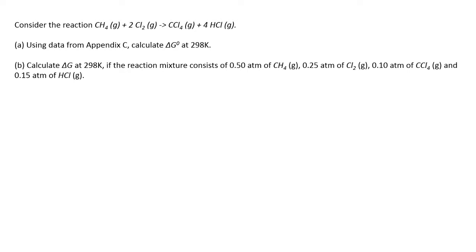Part A of this exercise is using the data from Appendix C, calculate delta G° at 298 Kelvin. Part B is calculate delta G at 298 Kelvin if the reaction mixture consists of 0.5 atm of methane, 0.25 atm of chlorine and 0.1 atm of carbon tetrachloride and 0.1 atm of hydrogen chloride.